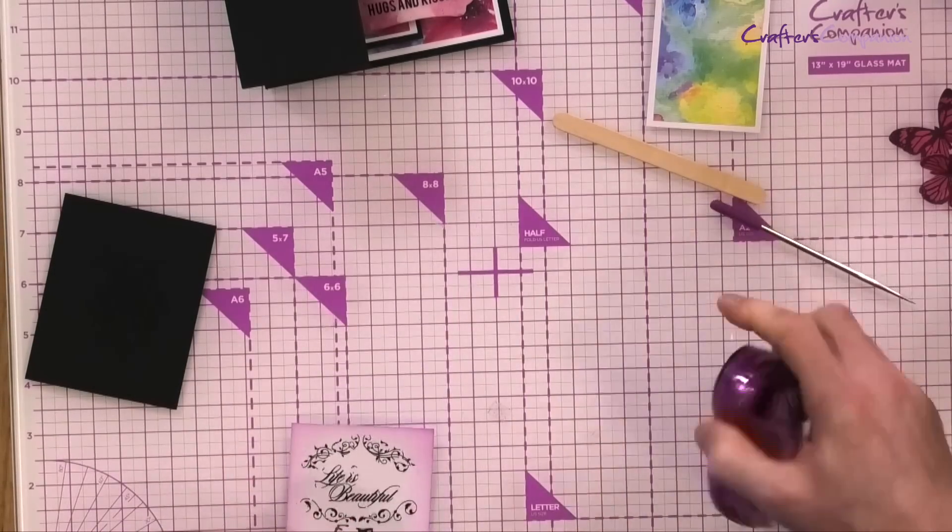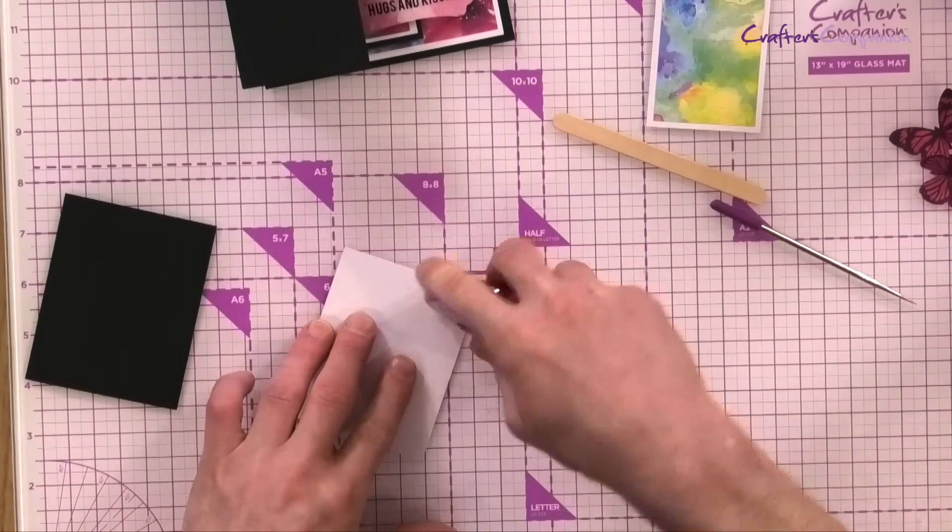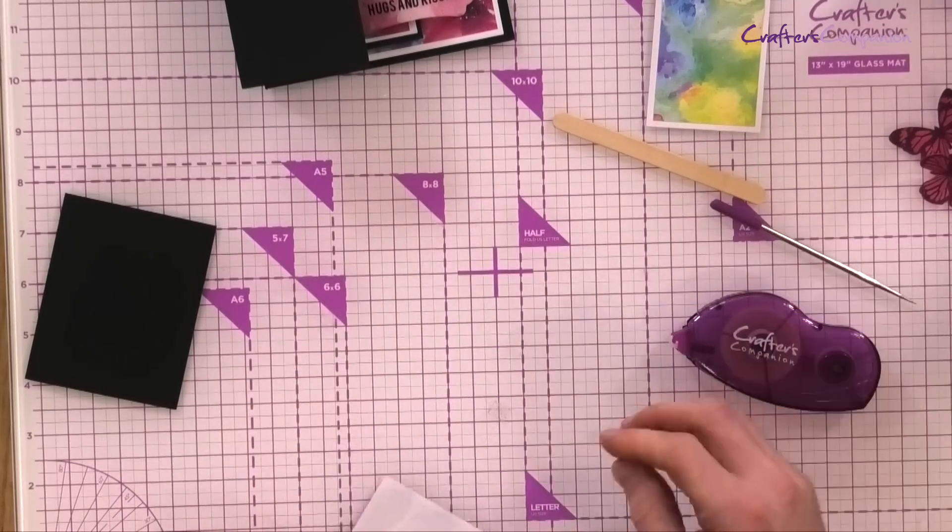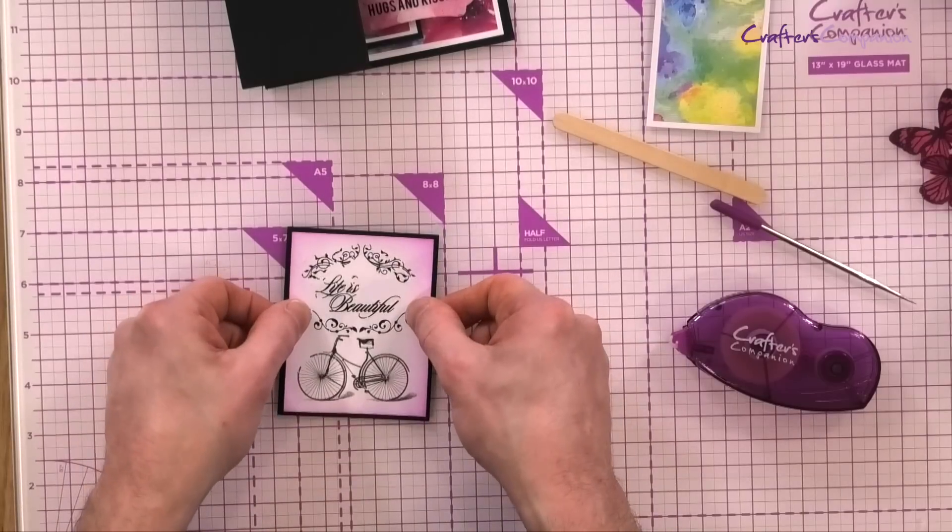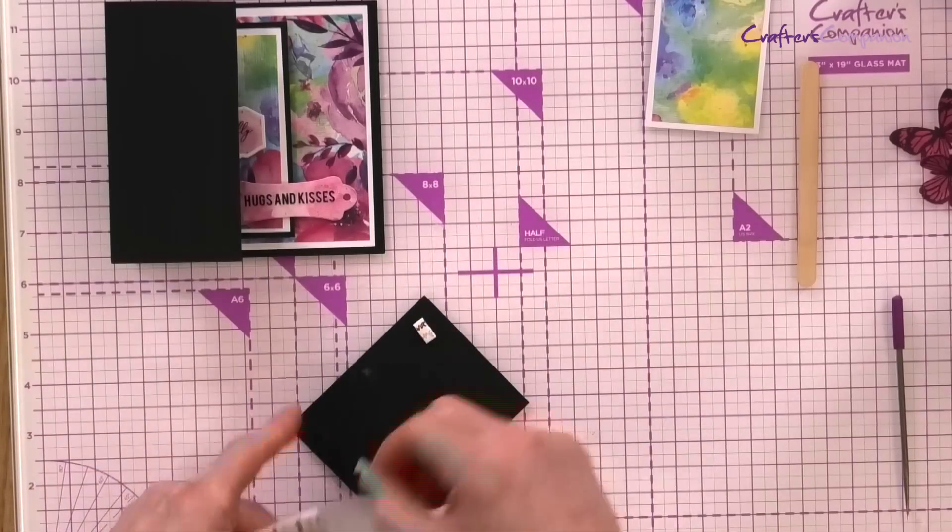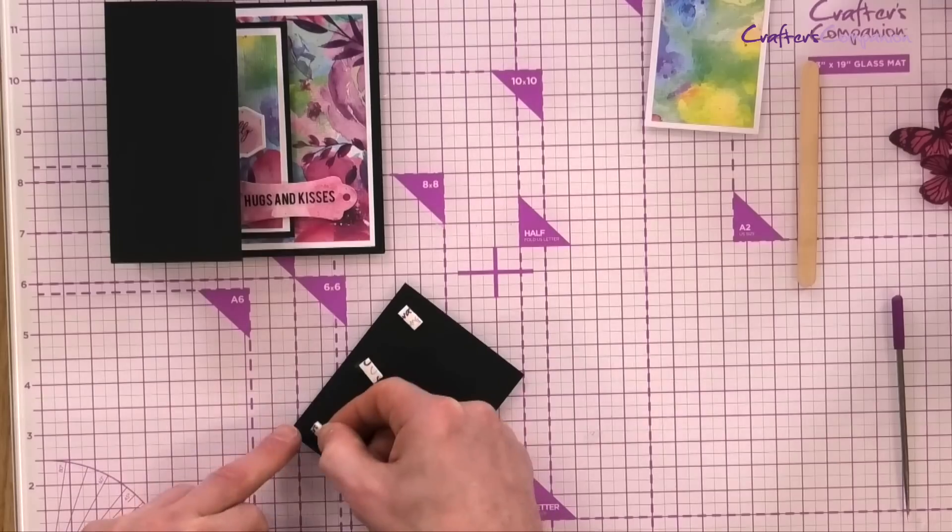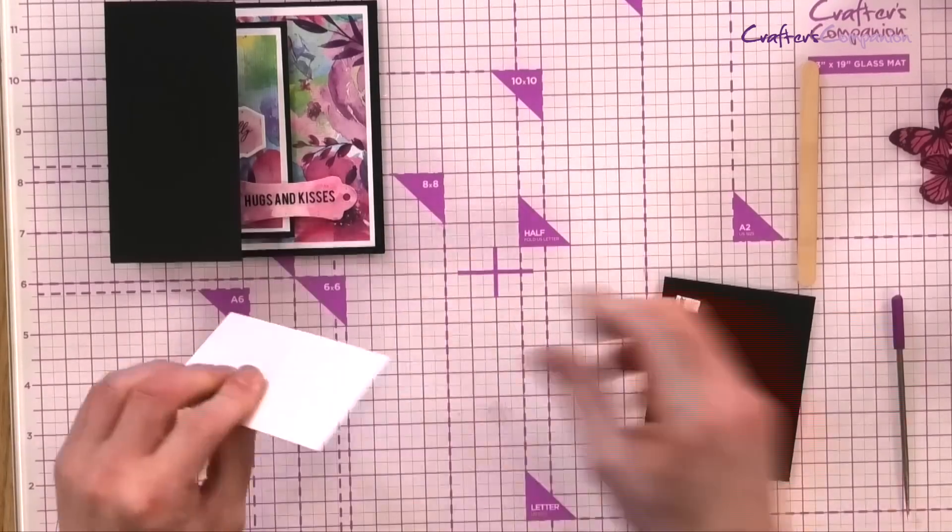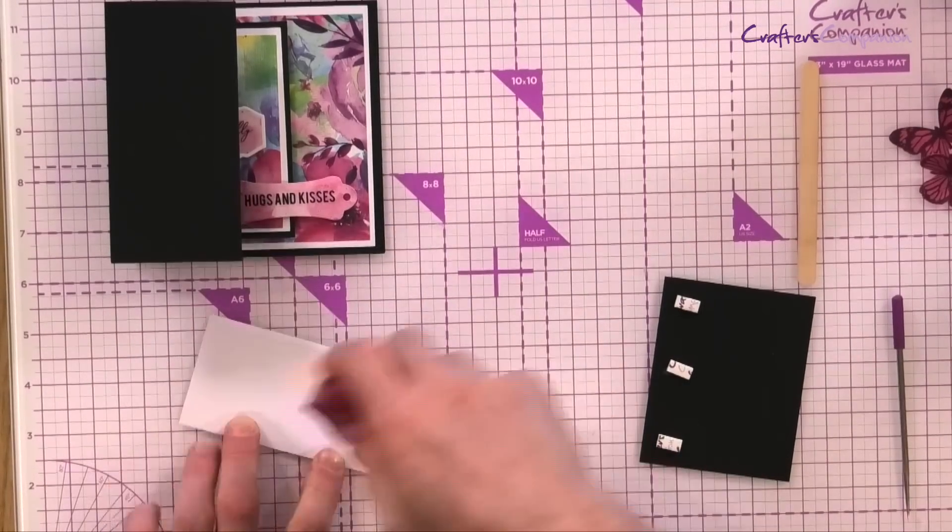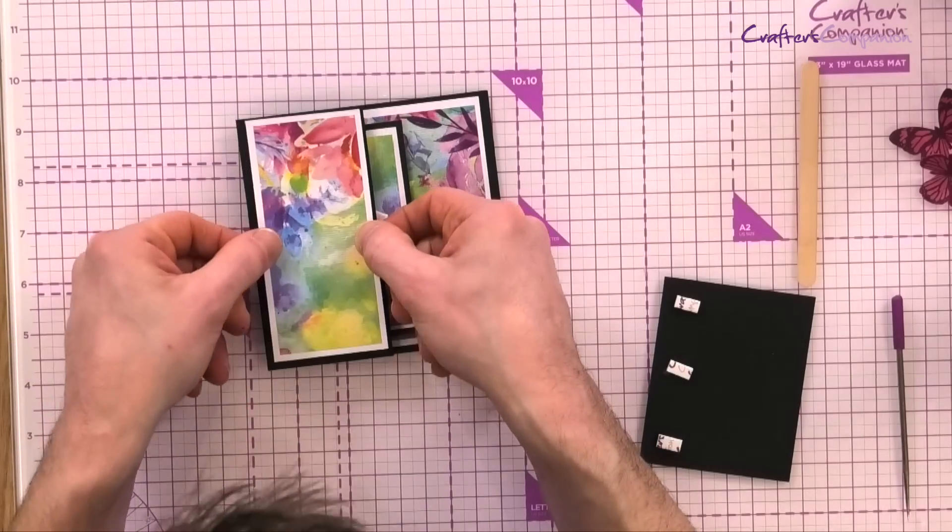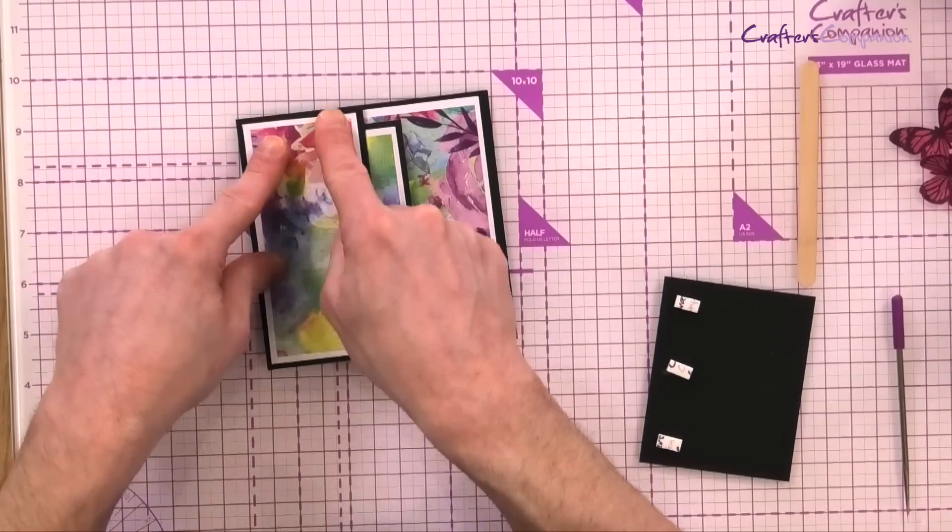Then we're just going to take our tape pen and just do a bit of matting and layering over the back onto the black cardstock. There we go. So we're just going to add some foam pads to the back here, just down the side. Pop that to the side for one second. And we're just going to take this strip that we've already matting and layered, and we're just going to add some tape to the back. Pop this into place.